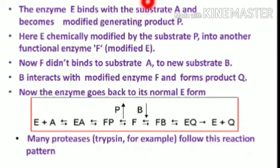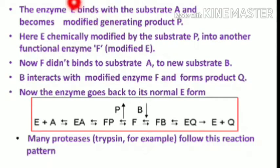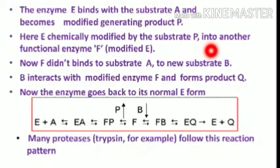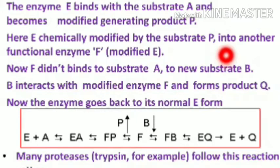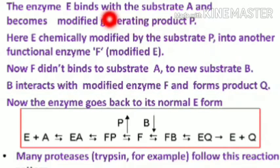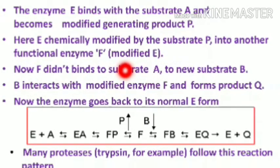Why is it called the Ping Pong mechanism? A ping pong ball is very lightweight. When you drop it on the ground, it bounces back upward — then back down again. This repeated displacement of the ball from ground to upside is reflected in the term 'ping pong.' Likewise, the enzyme gets modified during the reaction, which is why it is also called the double displacement mechanism.